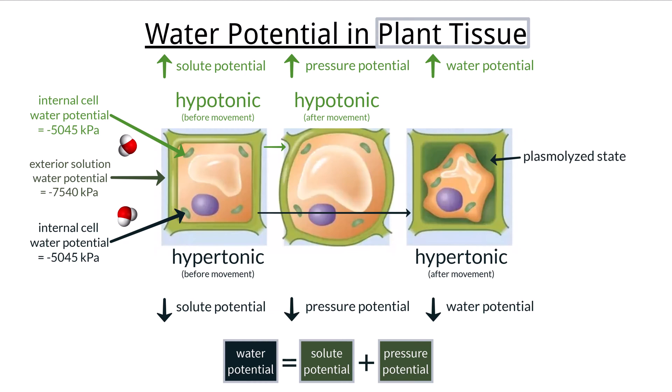At this point, the plant is flaccid and wilted. In either case, water will continue to move until the water potential inside of the cell equals the water potential outside of the cell.